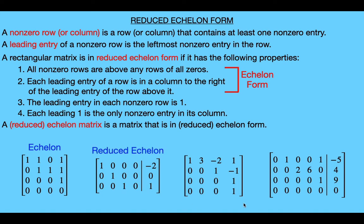For this next matrix, the leading entry for the third row and the leading entry for the fourth row are such that the fourth row's leading entry is not in a column to the right of the leading entry of the row above it. So it doesn't satisfy the second property, and this matrix is neither in echelon nor reduced echelon form.